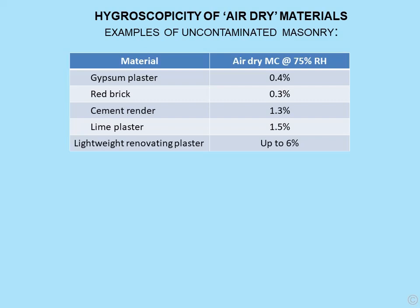Hygroscopicity of air dry materials — examples of uncontaminated masonry measured at 75% relative humidity: gypsum plaster 0.4%, red brick 0.3%, cement render 1.3% (usually higher if not carbonated), lime plaster 1.5%. These values will vary depending on the material; some lightweight renovating plasters are up to about 6%. These are clean air dry materials. However, as we'll see later, if we contaminate those materials with certain salts — hygroscopic deliquescent salts — then our air dry moisture contents, even at 75%, can increase massively, sometimes making the material actually look visibly damp.